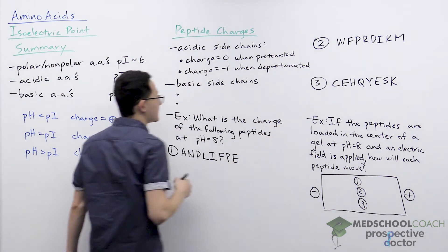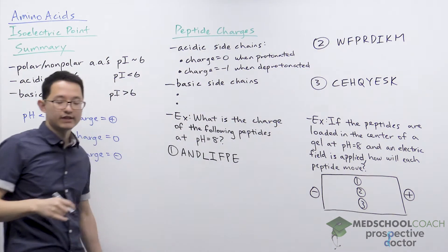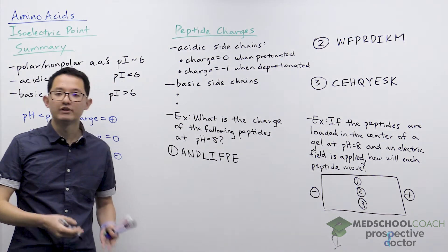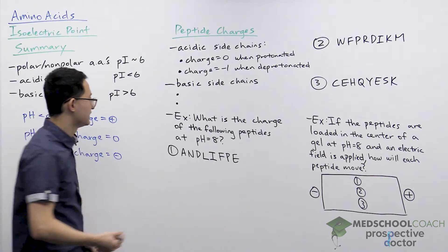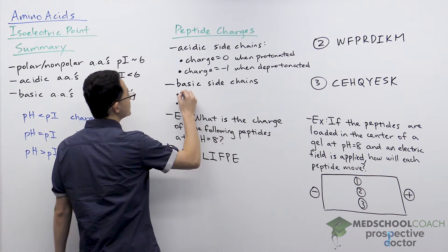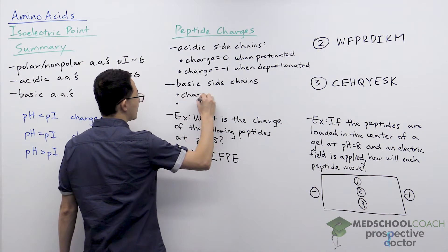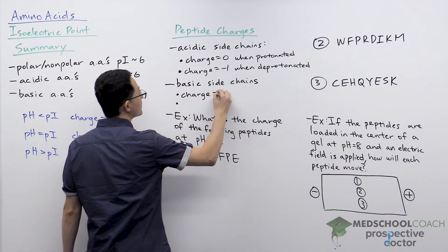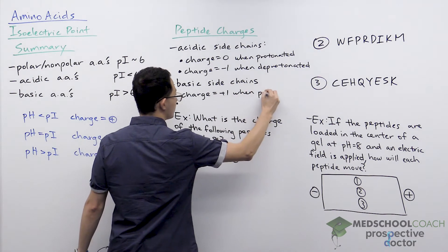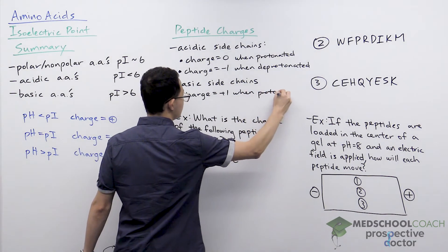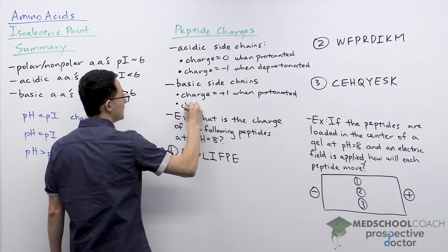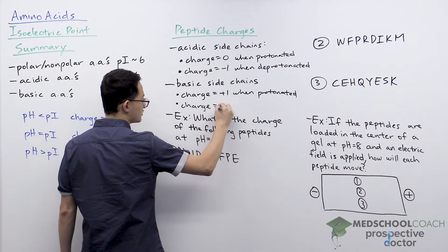For basic side chains, it's slightly different. Think about histidine, arginine, and lysine. When they're protonated, the amino group on the side chains has a positive charge of plus one. When they're deprotonated, they have no charge.